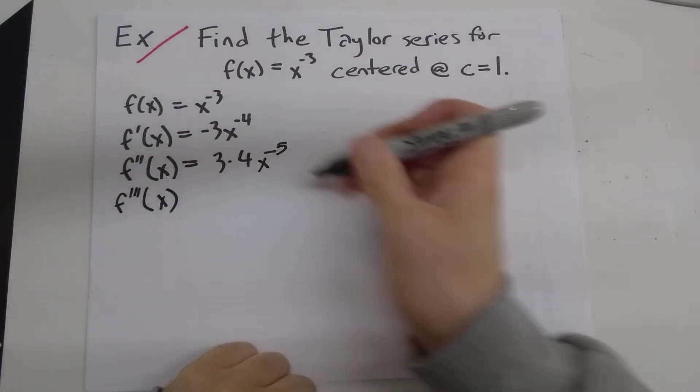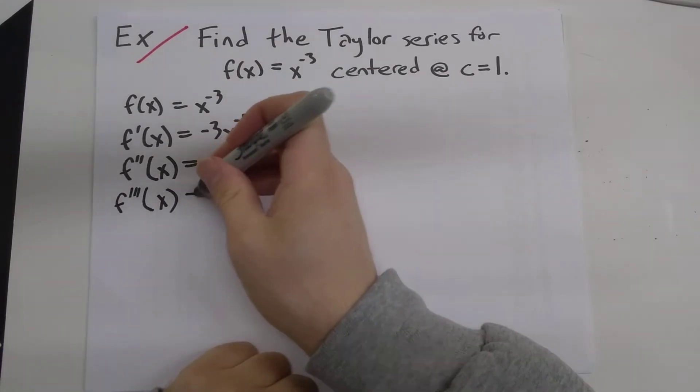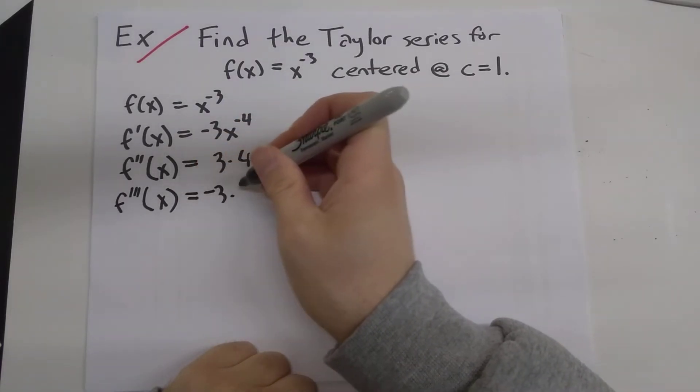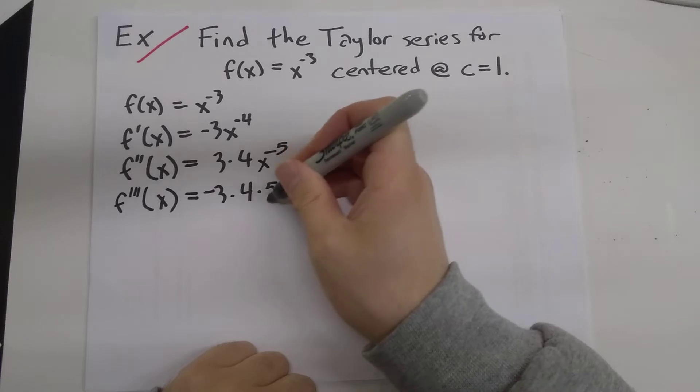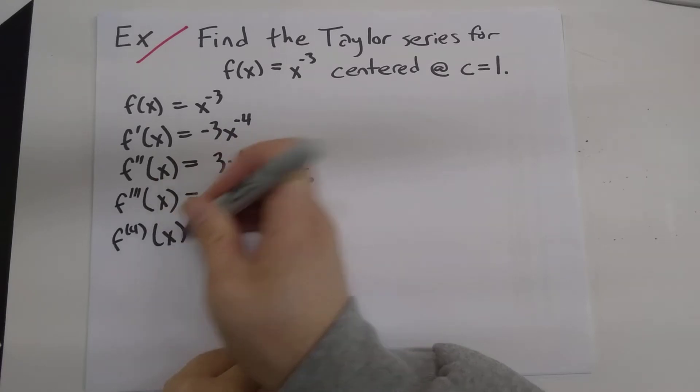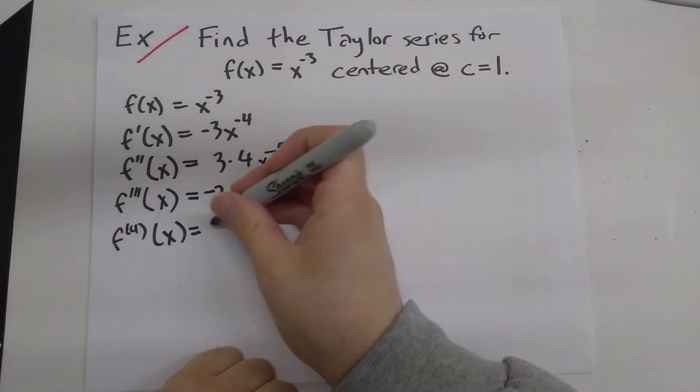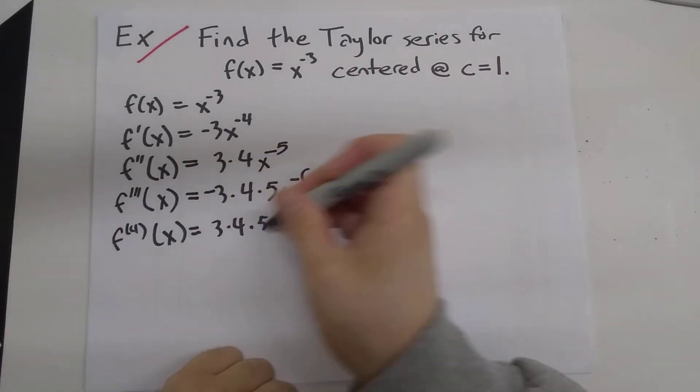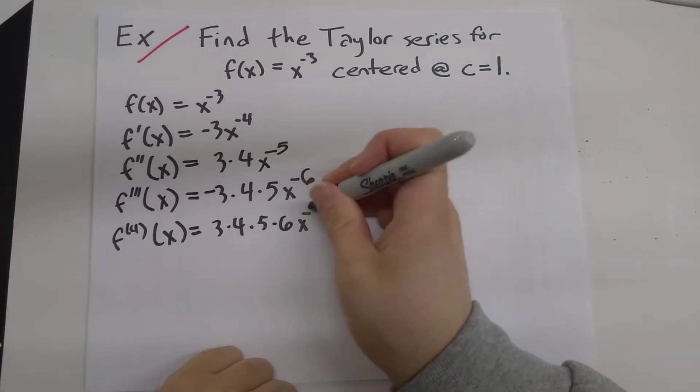The third derivative, now there will be a minus sign again. Minus 3 times 4 times 5, x to the minus 6. The fourth derivative, so those minus sign again cancels. 3 times 4 times 5 times 6, x to the minus 7.